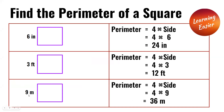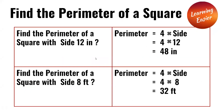In the third square, the side is 9 meters. 4 times 9 equals 36 meters. Find the perimeter of a square with side 12 inches. 4 times 12 equals 48 inches. Find the perimeter of a square with side 8 feet. 4 times 8 equals 32 feet.